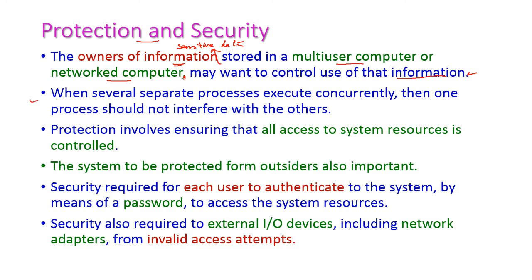When several separate processes execute concurrently on the CPU, one process should not interfere with another; both should execute separately. Protection involves ensuring that all access to system resources is controlled, and the system must also be protected from outsiders.